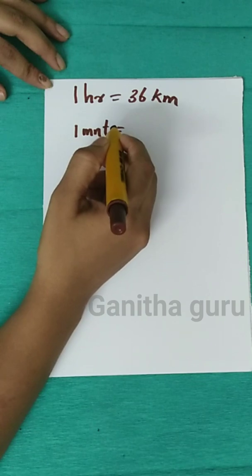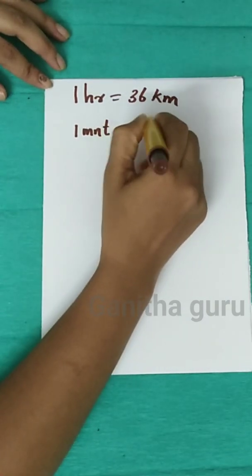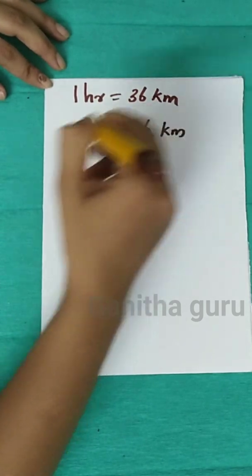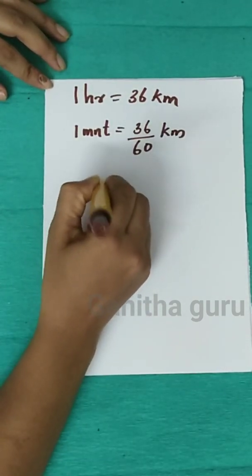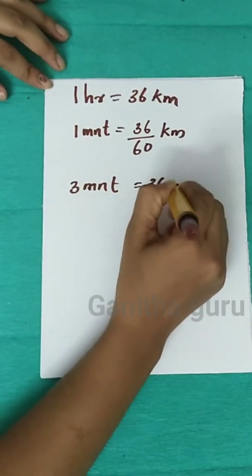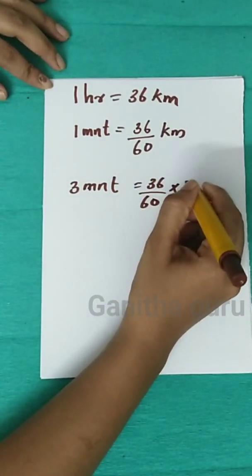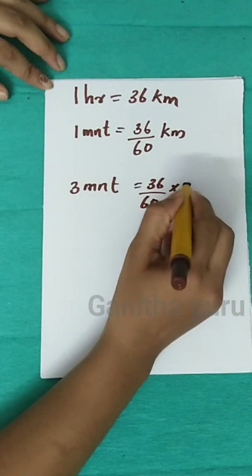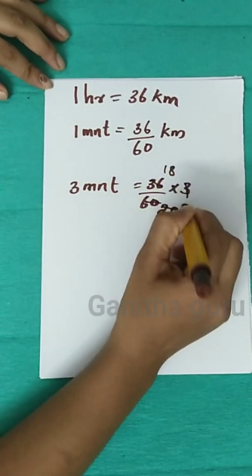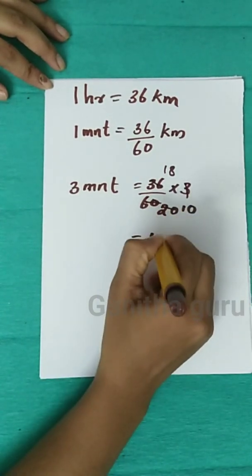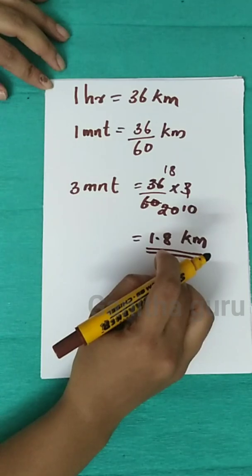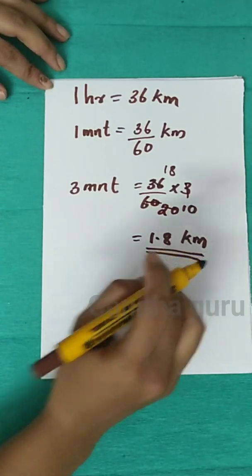In 1 minute, distance = 36 divided by 60 km. For 3 minutes, that is 36 divided by 60 into 3, which gives 18 by 10, that is 1.8 km.